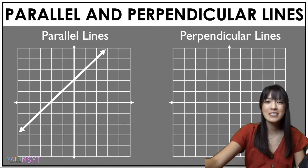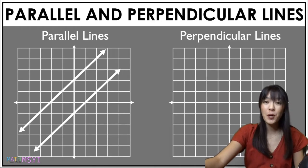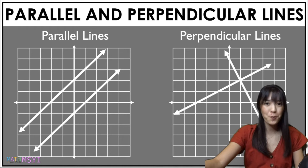As a quick reminder, parallel lines never intersect and perpendiculars intersect at one point, creating a right angle or 90 degrees.